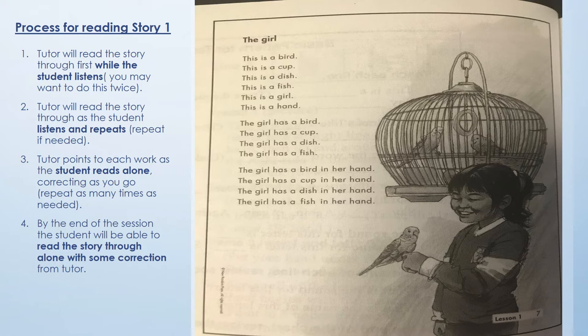In step two, the tutor reads the story as the student listens and repeats — you read a sentence, the student repeats, and so on. You may want to do this a couple of times. In step three, the tutor points to each word as the student reads alone. You correct as you go, asking the student to recall what particular sounds you're working on. For instance, if they struggle with the word 'girl,' refer back to G on the phonics chart as the starting place for decoding that word.